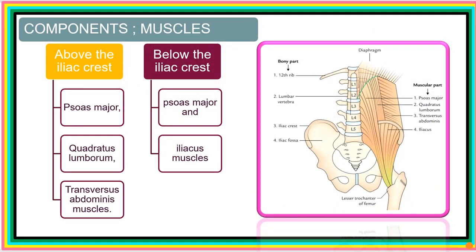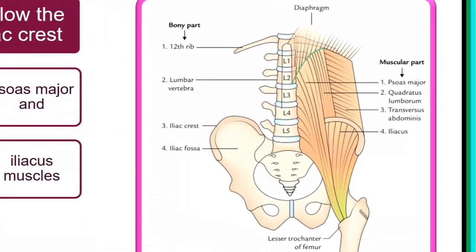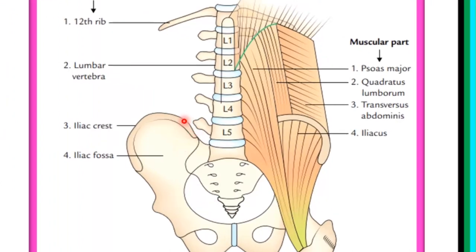Moving to the muscles, we'll look at them in two regions — those above the iliac crest and those below the iliac crest. Here is the iliac crest on both sides. We'll consider the muscles that are above the iliac crest and then consider the muscles that are below the iliac crest.